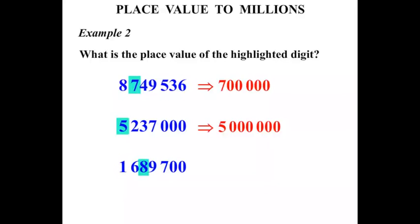1,689,700. The 8 is highlighted. What is it worth? Well, we go ones, tens, hundreds, thousands, ten-thousands. We've got 8 lots of 10,000, and that is worth 80,000.